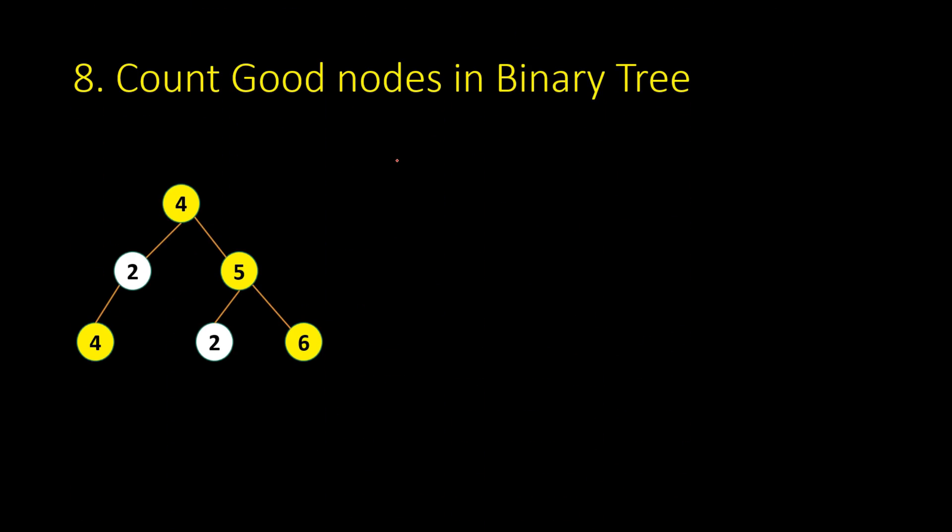Next is count the good nodes in binary tree. First, you need to understand good nodes. A good node is a node which, if you start from root, there would be some path to reach that node. From root to that node, all the nodes are less than or equal to that current node - then that node is a good node.